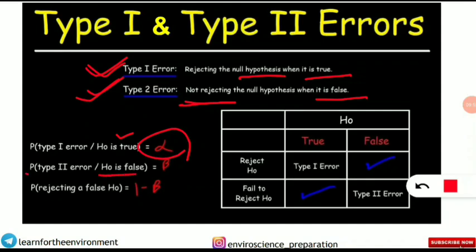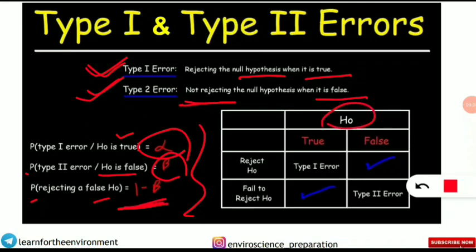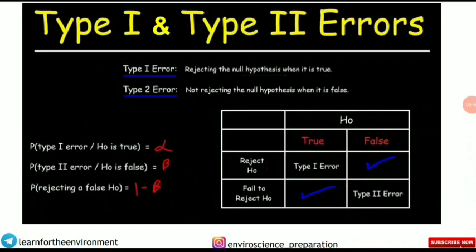The probability of Type 2 error when the null hypothesis is false is denoted by beta (β). The probability of correctly rejecting a false null hypothesis is 1 minus beta (1 − β). To summarize: null hypothesis true but rejected = Type 1 error; null hypothesis false but failed to reject = Type 2 error.